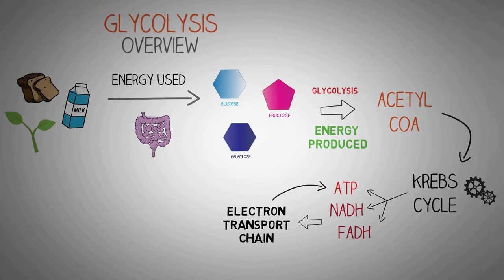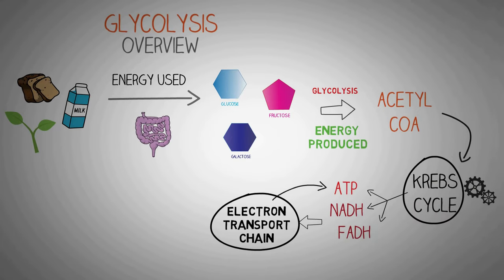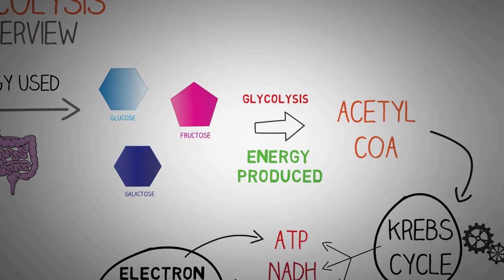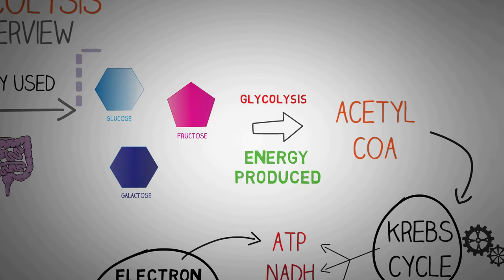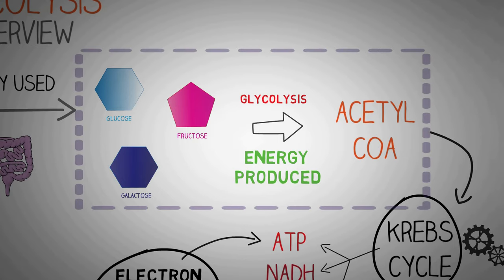You can check out the videos on Krebs cycle and electron transport chain on our channel to learn more details about them. In this video we will look at the first phase of carbohydrate metabolism, i.e. glycolysis, in which glucose, galactose and fructose are converted into pyruvate and then to acetyl-CoA through a series of 10 reactions, and how these reactions produce energy.